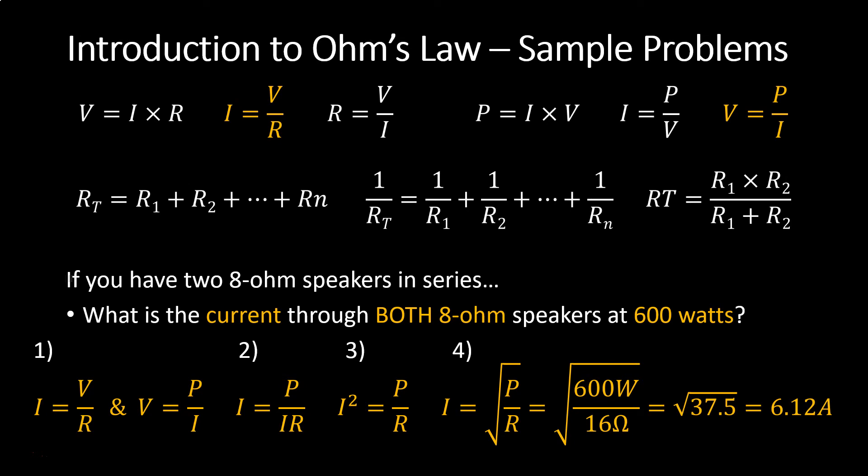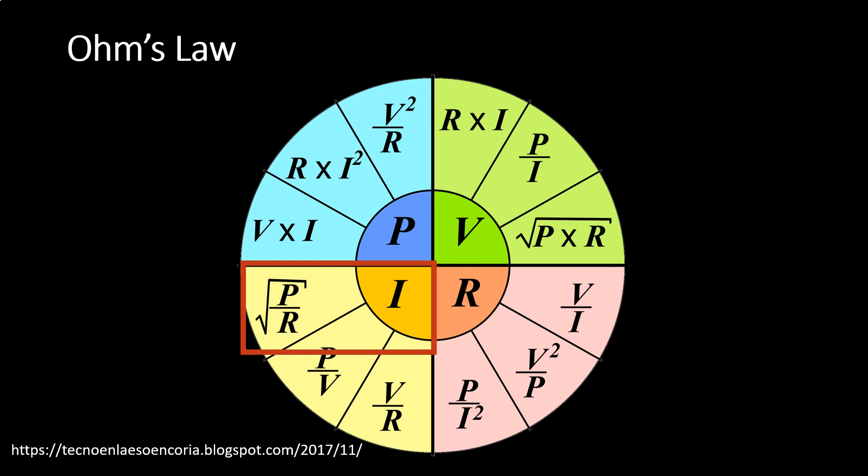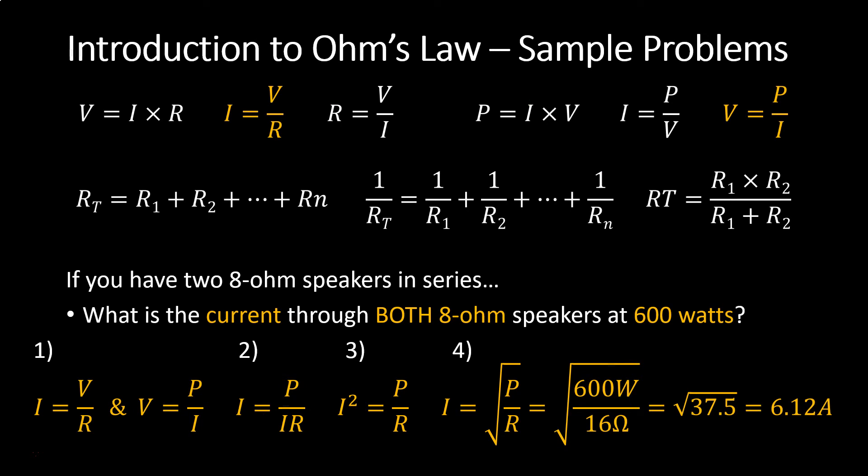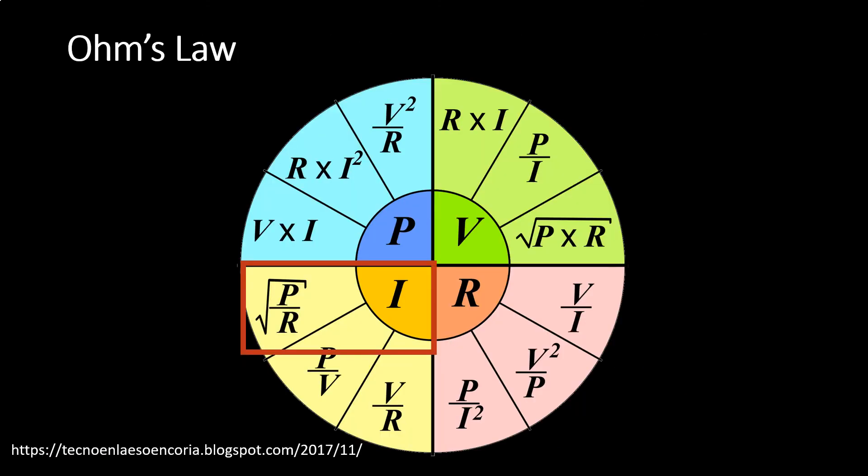This is where the circle comes into play. That was a lot of math to figure out using just the top equations. But if you use the circle — given power and resistance, solving for current — the equation is just given to you: square root of P over R equals current. All of that math is avoided by looking up current on the circle when you know power and resistance.